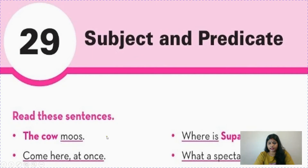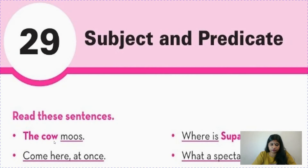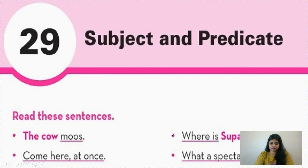Why are some words underlined here? Like 'the cow moves' — can you tell me whom we are talking about? We are talking about the cow, so 'the cow' is the subject. Whom we talk about becomes the subject, and what we say about the subject becomes the predicate. 'The cow' is subject because we are talking about the cow, and 'moves' is the predicate — what we are saying about the cow.